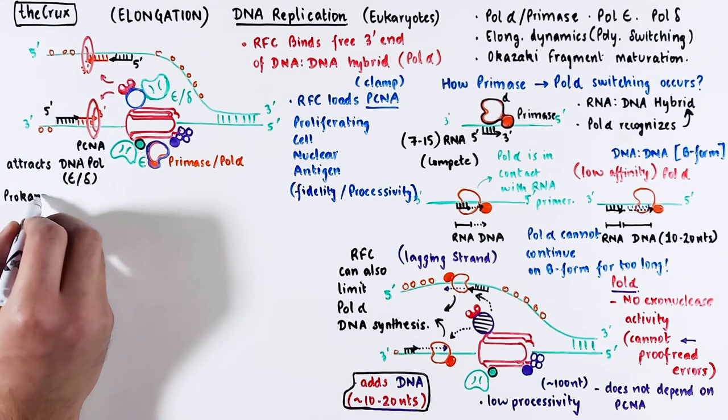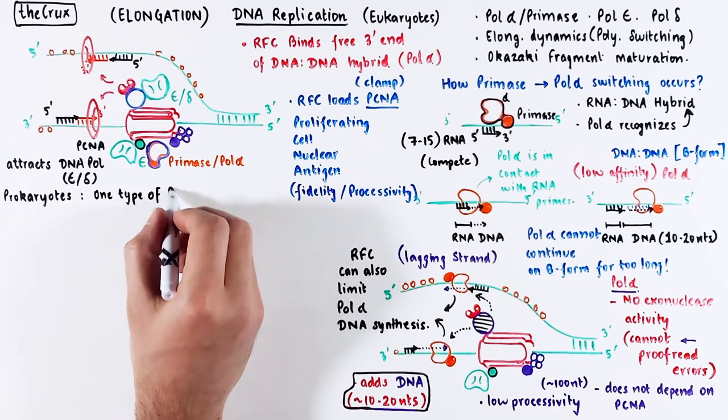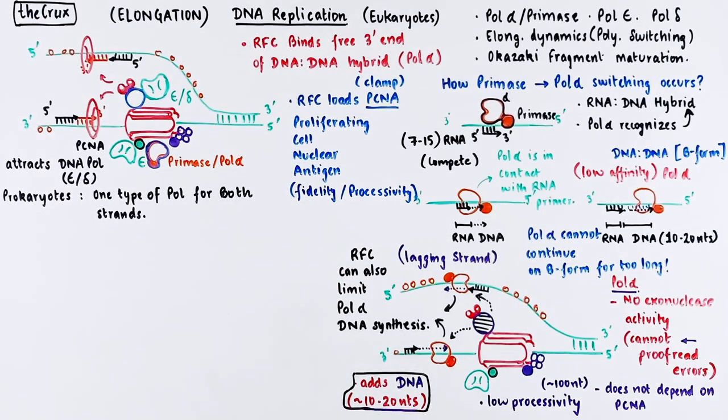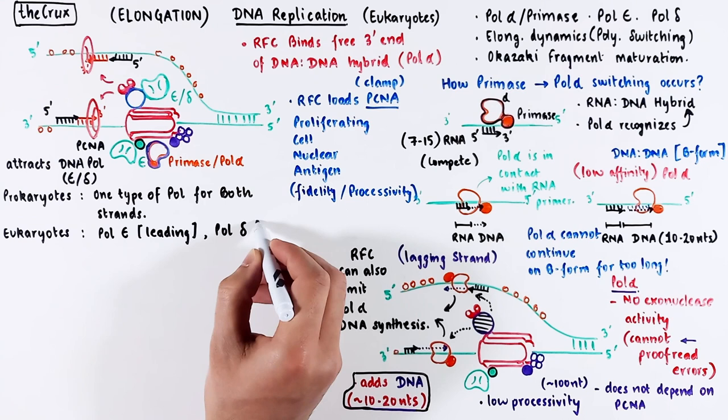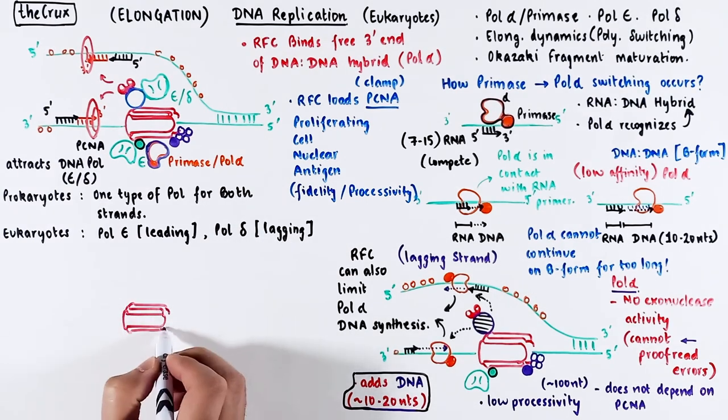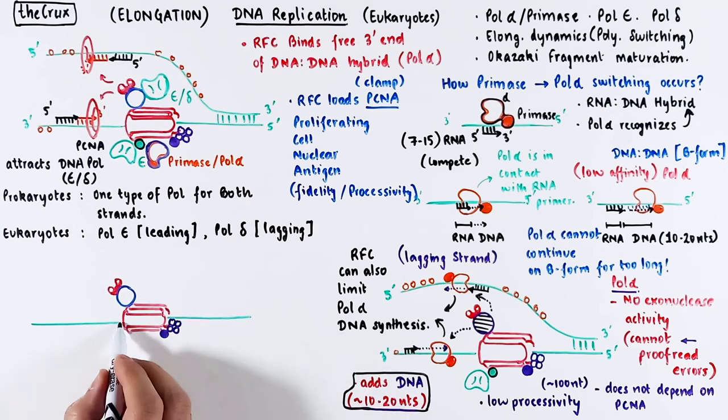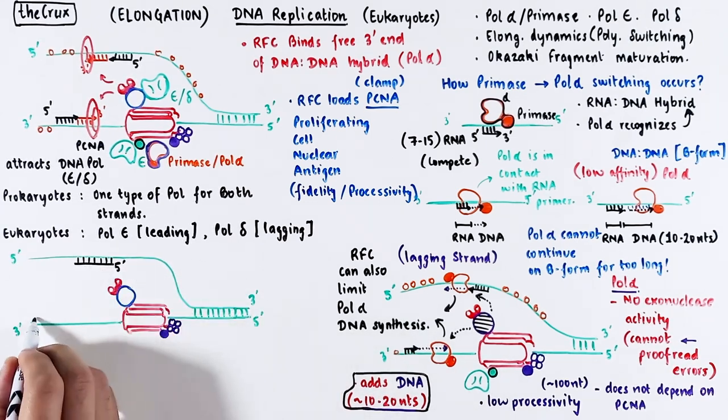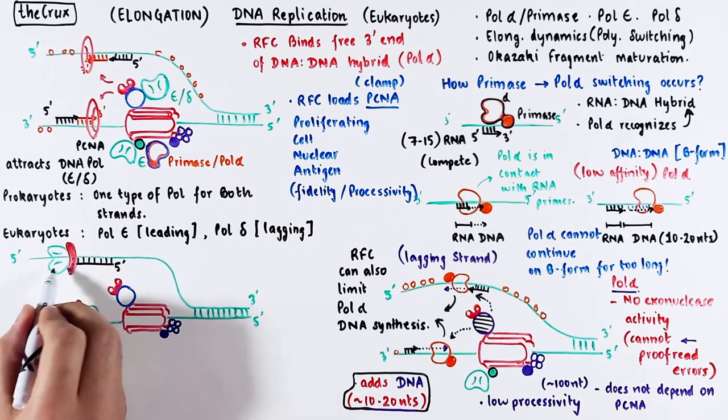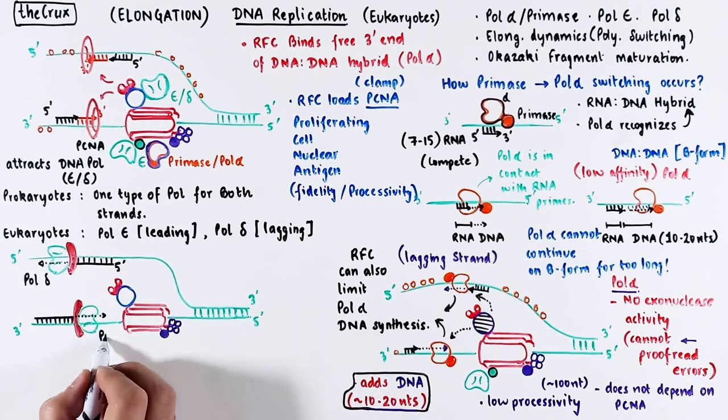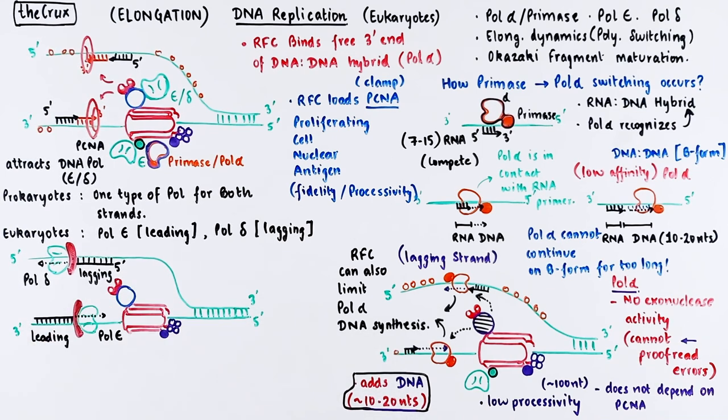Now comes another difference between the prokaryotes and eukaryotes. Prokaryotes have only one type of polymerase for both leading and lagging strand synthesis. In eukaryotes, the polymerase epsilon performs the leading strand synthesis and polymerase delta performs the lagging strand synthesis. So that picture will look something like this. Now we have replaced the DNA polymerase alpha successfully with a DNA polymerase epsilon on the leading strand and DNA polymerase delta on the lagging strand. And this handoff between the two types of polymerases, the non-processive DNA pol alpha and the processive polymerase delta and epsilon is called polymerase switching. This handoff is performed by the RFC.